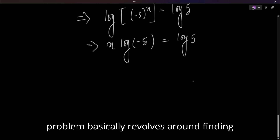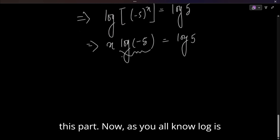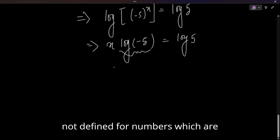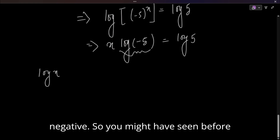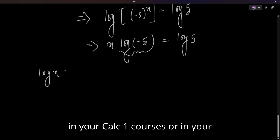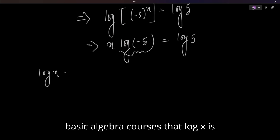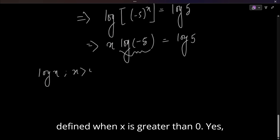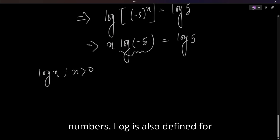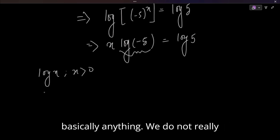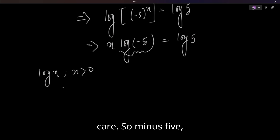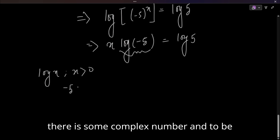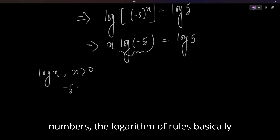Now as you know, the logarithm is not defined for negative numbers in real analysis — log(x) requires x > 0. But that is only for real numbers. The logarithm is also defined for complex numbers, where the input can be essentially anything. Minus 5 corresponds to a set of infinitely many complex numbers whose logarithm gives you -5.